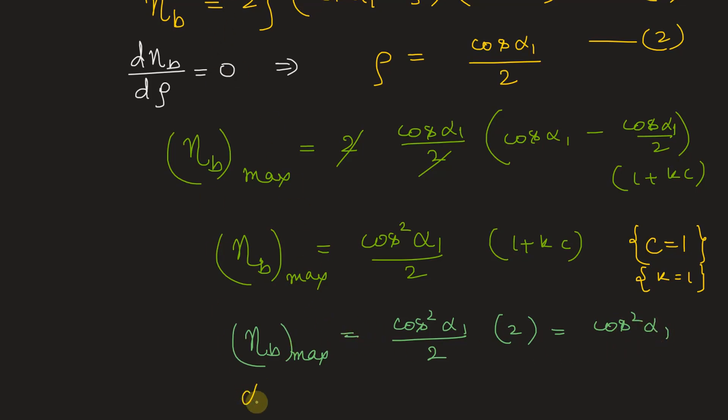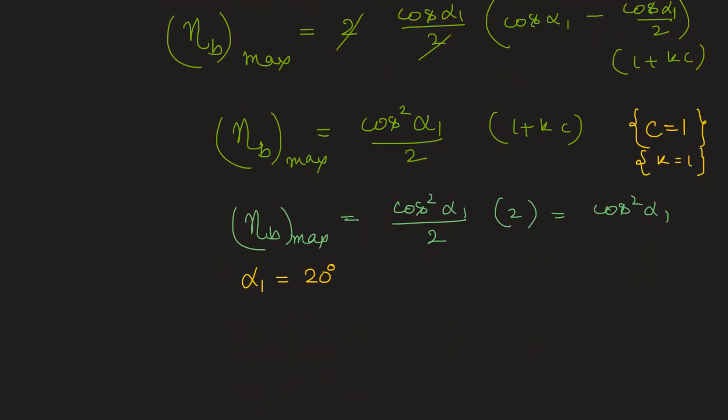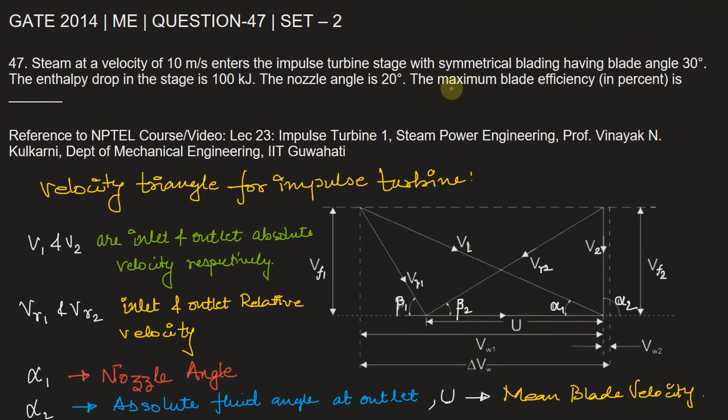Now in the problem, we are given the value of alpha 1 that is equal to 20 degrees. So it's very easy to find the maximum blade efficiency. So eta B max will be equal to cos square 20 degrees and this value is equal to 0.883 or in percentage, we can write 88.3 percent. Okay. Now let's go back and fill in the blank. So the maximum blade efficiency is 88.3 percent.